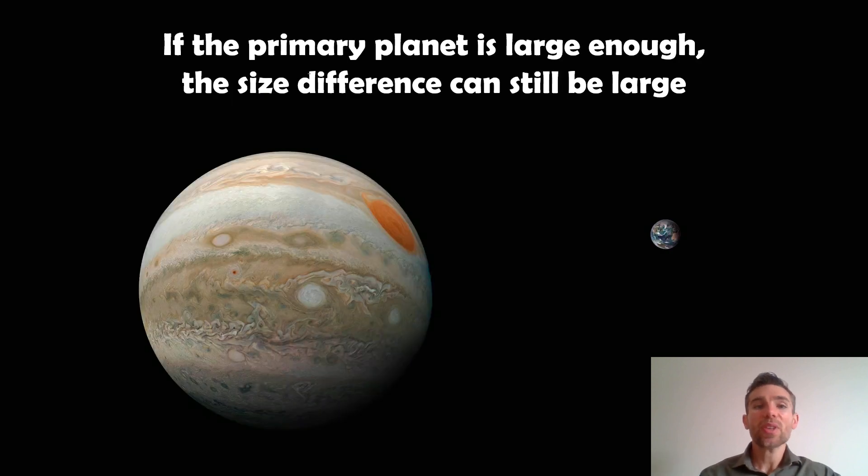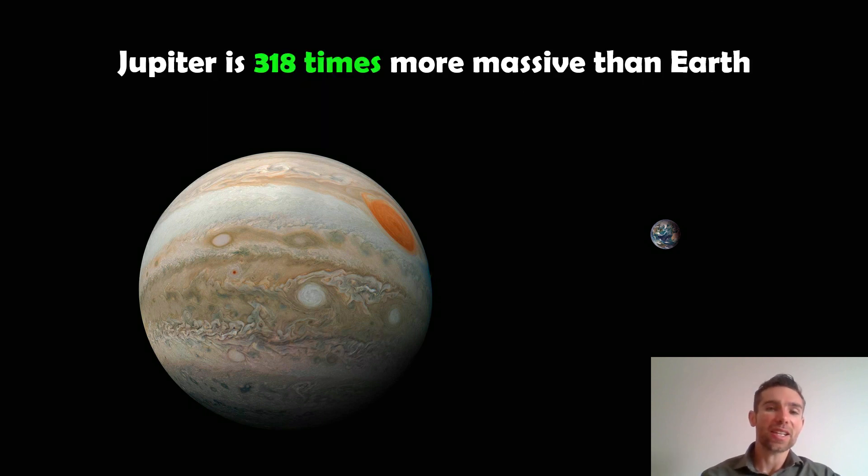So if your primary planet, in this case here Jupiter or a gas giant is going to be large enough, then your size difference can still be quite significant. So you could actually have a planet orbiting it. And is it going to be a planet? Is it going to be a moon? Well, in this case here, Jupiter is about 318 times more massive than Earth. That's a considerable size difference or mass difference between the two. That means the barycenter for that system, if they were orbiting each other, orbiting a common center of mass, is going to be very close to Jupiter. That means the Earth is going to appear to go around Jupiter as opposed to them both orbiting a common center of mass at a similar sort of distance.